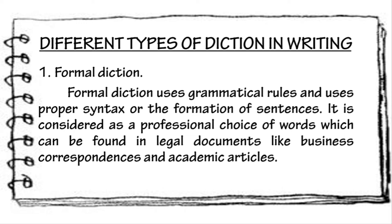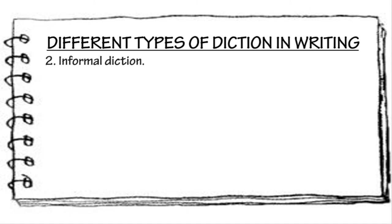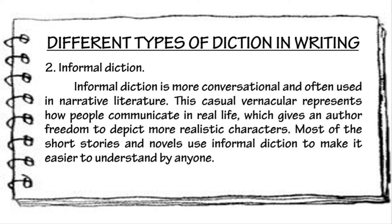Next, we have informal diction. Informal diction is more conversational and often used in narrative literature. This casual vernacular represents how people communicate in real life, which gives an author the freedom to depict more realistic characters. Most short stories and novels use informal diction to make it easier to understand. Informal language is the language of everyday speech. It should never be used in formal or academic writing, except when it is part of a quotation or block of dialogue.